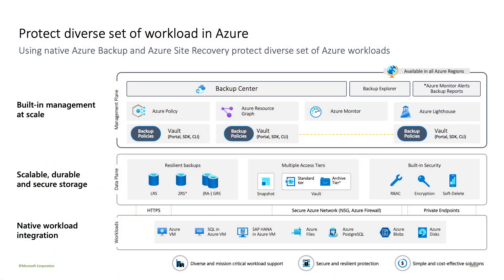Looking at native workload integration from the bottom up, Azure today supports a wide variety of workloads, and we are constantly adding new workload support regularly. When we take a backup and move it to the data plane, we use secure channels — private endpoints, network security groups (NSG), and Azure firewalls. Once the data gets moved to the data plane, it gets stored in multiple tiers.